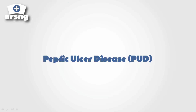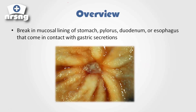We're talking about peptic ulcer disease, which is a pretty common occurrence — a lot of people might experience it at some point in their lives. It's really just a break in the mucosal lining of the stomach, pylorus, duodenum, or esophagus that comes in contact with gastric secretions. When gastric acid is secreted into the stomach and touches the wall where that break is in the lining, it causes a lot of pain for the patient.